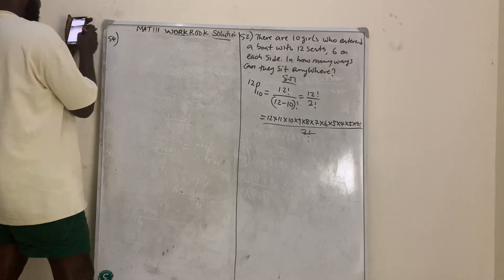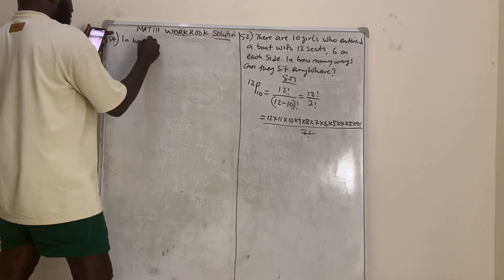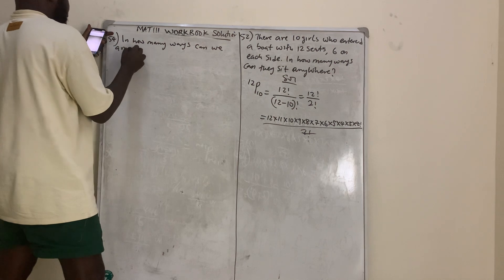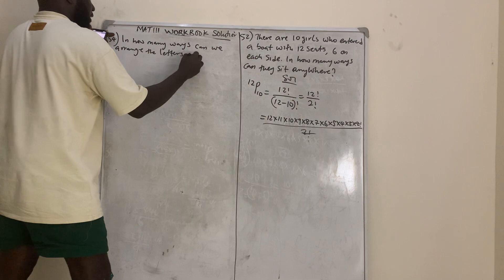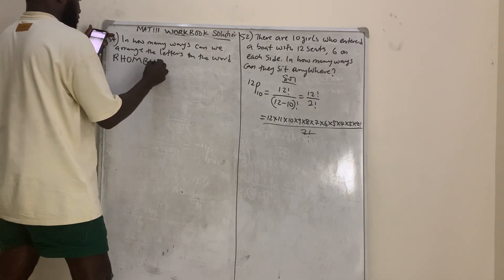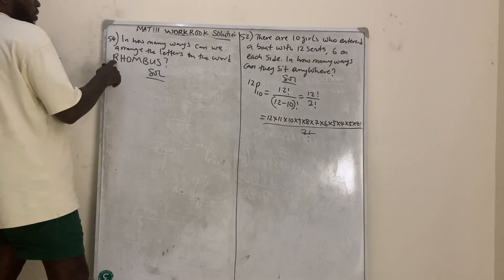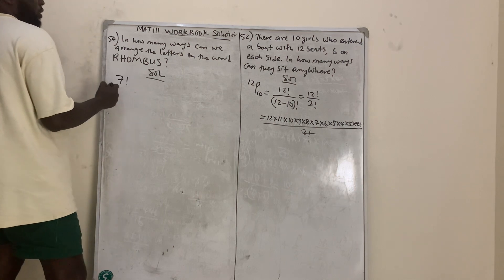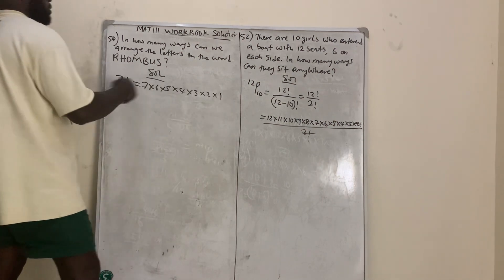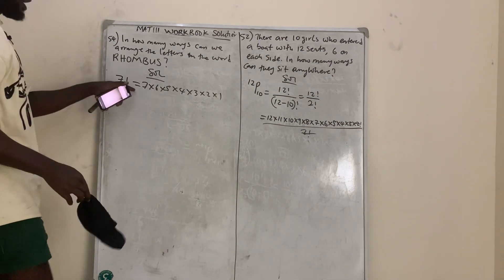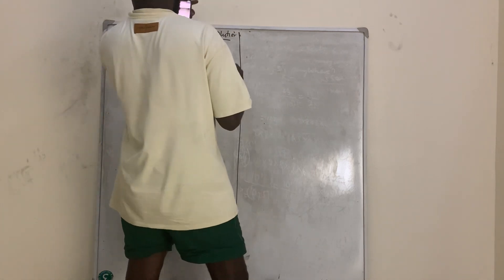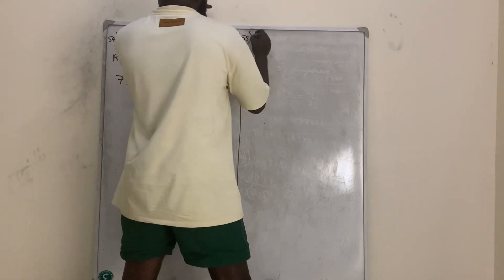Question number 54 asks in how many ways can we arrange the letters in the word RHOMBUS? The solution: RHOMBUS has seven letters — R, H, O, M, B, U, S — that is 7 factorial, since there is no repetition of any letter. So it is just 7 factorial, which is 7 times 6 times 5 times 4 times 3 times 2 times 1. If any letter were repeated, we would divide by the factorial of the repeated count.